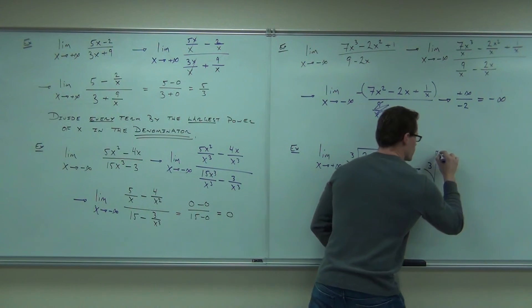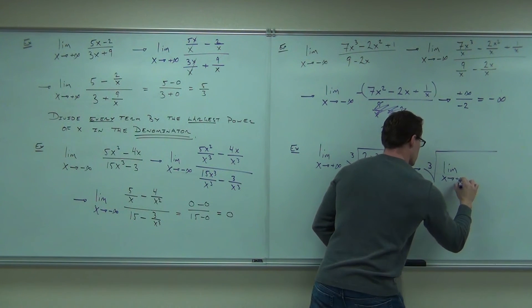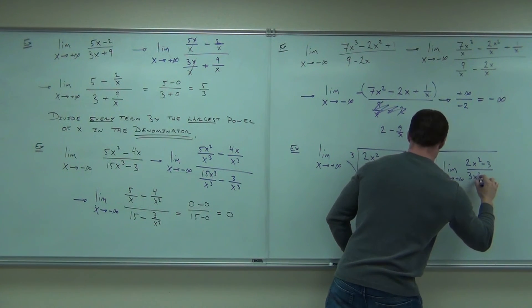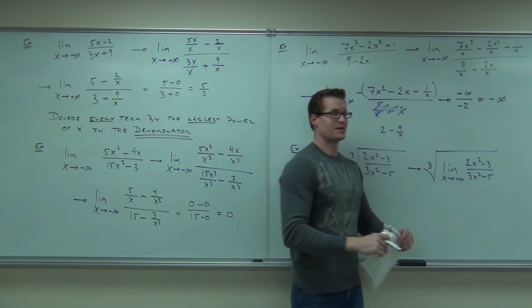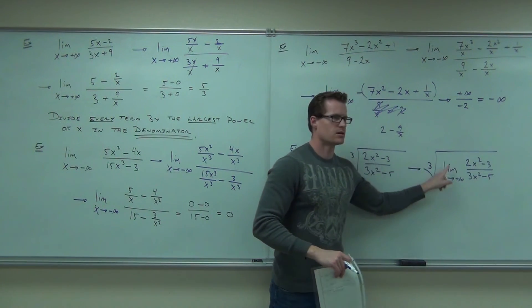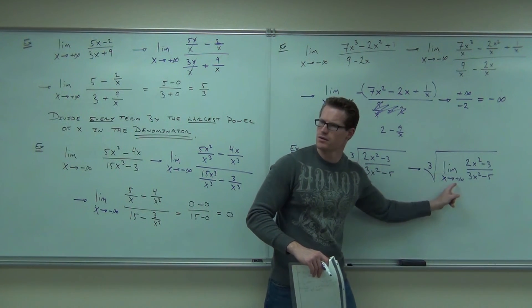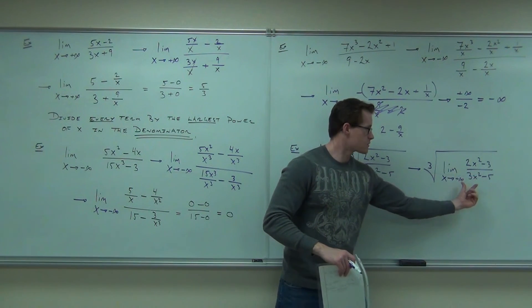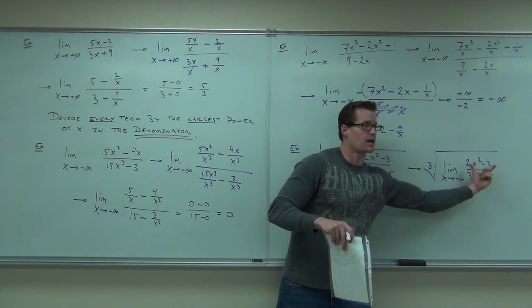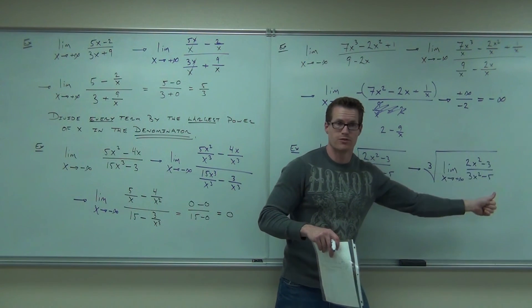Then look. You can take a cube root of the limit. Now ignore the cube root for a second, just for a second though. Can you do this limit? Yeah. Explain to me how you would do this limit. What would you divide by here? X to the right. Which one? X squared. X squared. Hey, where's this limit going to go on the inside? Do you see the two-thirds? Two-thirds. And then take a cube root of that.